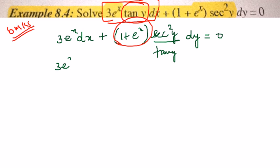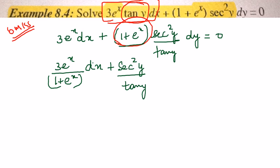It becomes 3e^x / (1 + e^x) dx plus, when I divide the second term by (1 + e^x) this term will vanish. So it will be plainly sec^2 y / tan y dy equals 0.